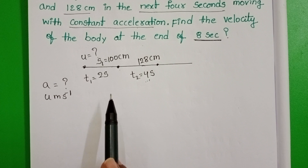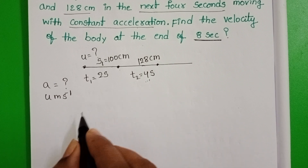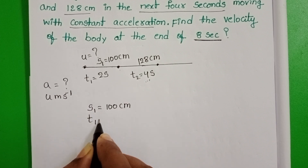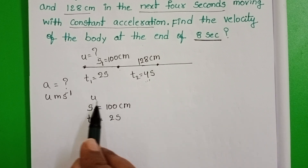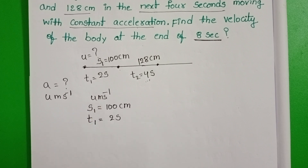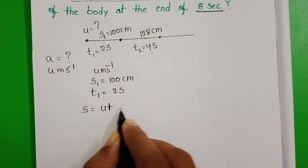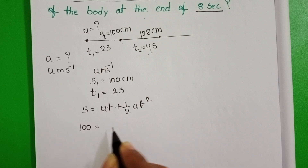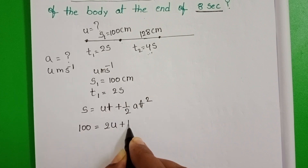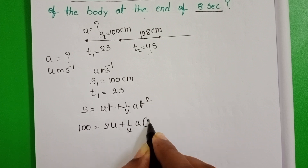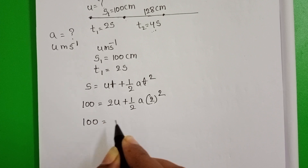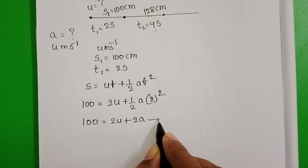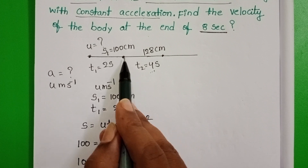By using this information, first find out the acceleration of the body. S1 equals 100 cm, time equals 2 seconds, and initial velocity is U m/s. Taking the equation of motion: S = UT + ½AT². Distance is 100, time is 2 seconds: 100 = 2U + ½ × A × 2² = 2U + 2A. Take this as Equation 1.